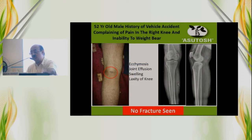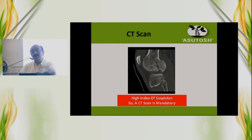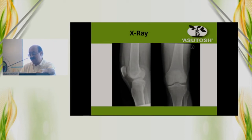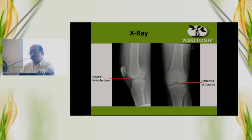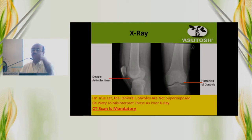This is a 52-year-old male, with a motor vehicle accident, presenting with pain in the right knee, some ecchymosis, some laxity, swelling, and no fracture seen initially. A CT scan is mandatory whenever you have any suspicion. Let's look at this x-ray — it looks fairly alright to the inexperienced, but there is some flattening of the condyle and you can see double articular lines of the distal femur. On a true lateral view, if the femoral condyles are not superimposed, be wary and never dismiss it as a poor quality x-ray. If in doubt, a CT scan is mandatory.